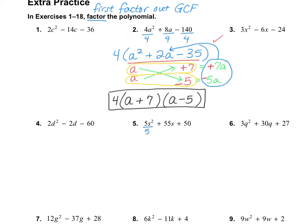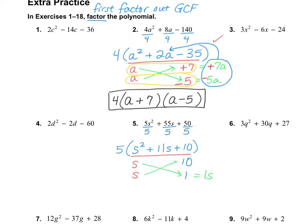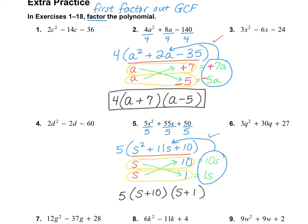Let's take a look at number 5. I need to find a number that multiplies out of the three terms — 5 comes out, leaving s squared plus 11s plus 10. The multiples of s squared are s and s. For 10, I could use 5 and 2, but I need them to add to 11, so I'll use 10 and 1 instead. Multiplying across: s times 1 is 1s, and s times 10 is 10s. Those do add up to the middle term, so our final answer is 5 times (s plus 10) times (s plus 1).